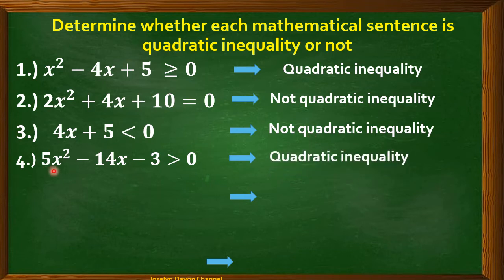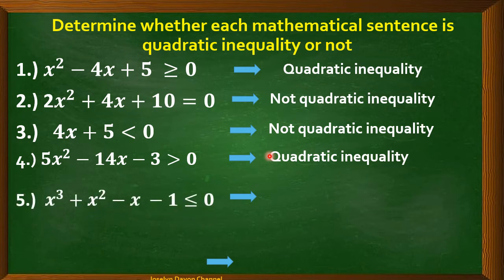Number 4: 5x² − 14x − 3 > 0. This is quadratic inequality. The degree is 2 and we have an inequality symbol.